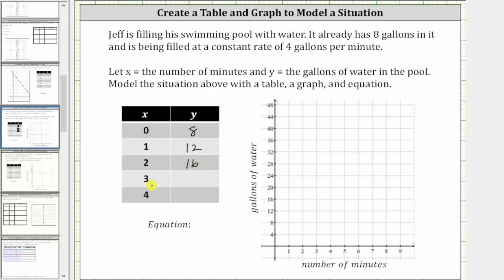When x is three, after three minutes, there will be 16 plus four, or 20 gallons of water in the pool. When x is three, y is 20.